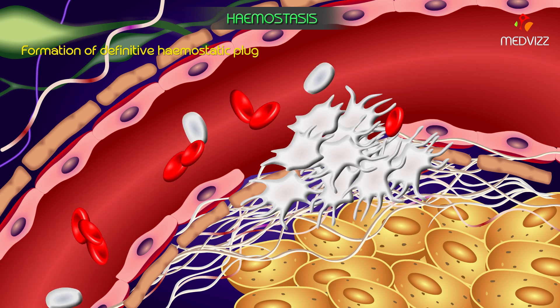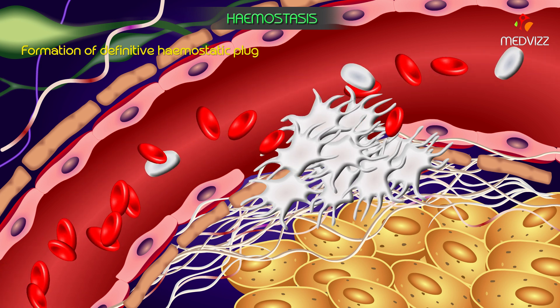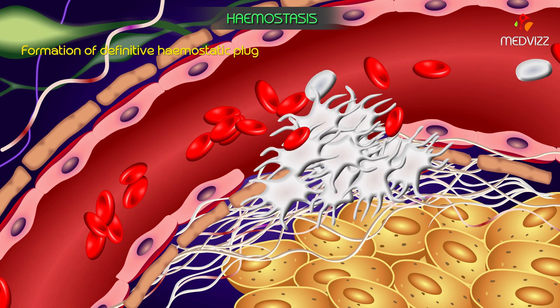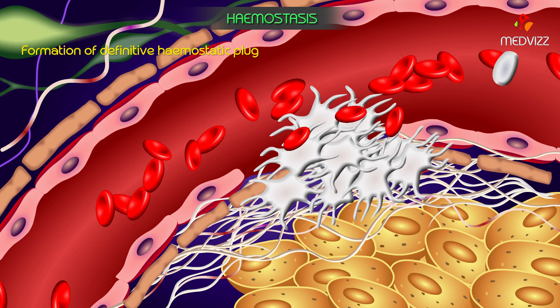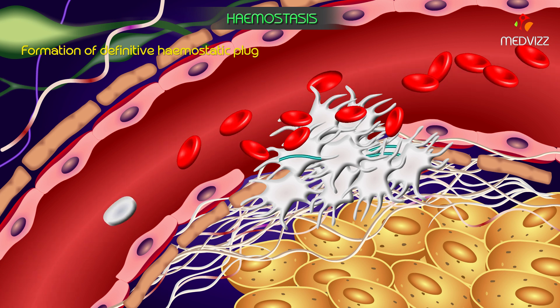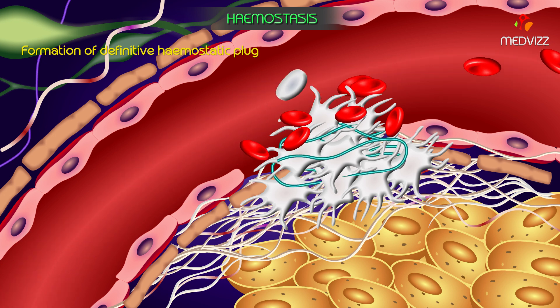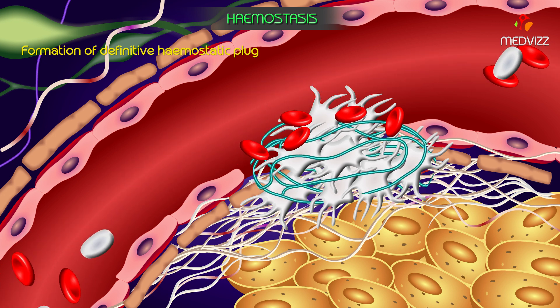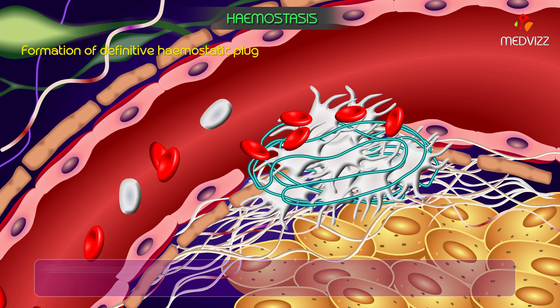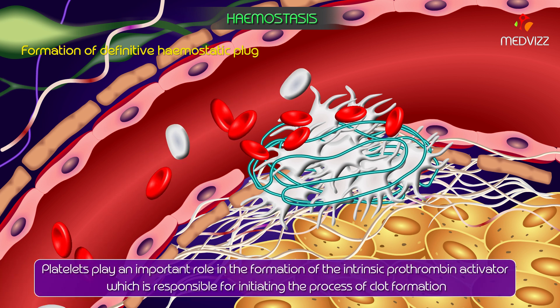The temporary platelet plug is converted into the definitive hemostatic plug by the process of clot formation, which involves a complex series of events. Platelets play an important role in the formation of the intrinsic prothrombin activator, which is responsible for initiating the process of clot formation.